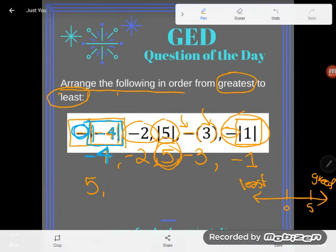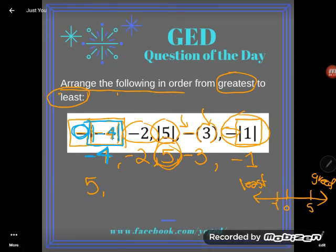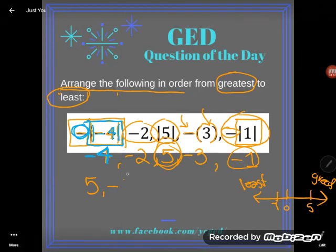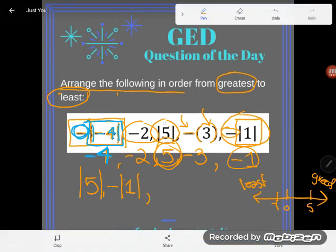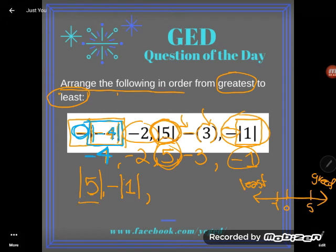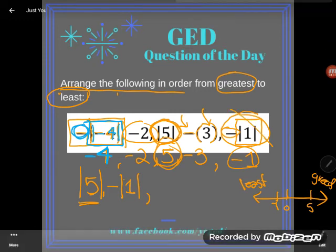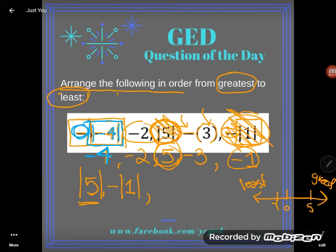So after zero, my next number would be negative one. So this negative one will come next, which, what was it written as? The opposite of the absolute value of one. Oh, I should write them in their original form. Sorry. So this five was originally the absolute value of five. So I'll write the absolute value of five. Then we have the opposite of the absolute value of one. Okay, let's cross these off. This is getting messy.